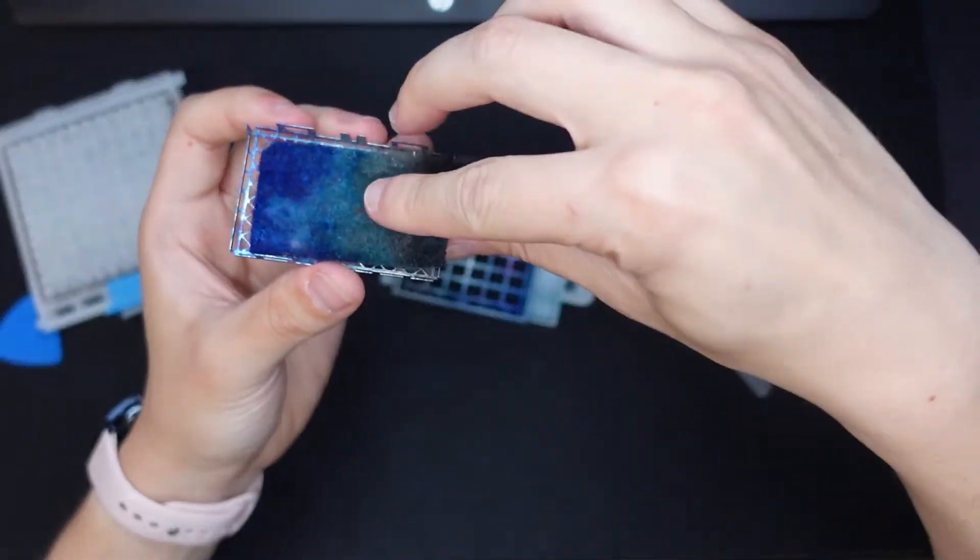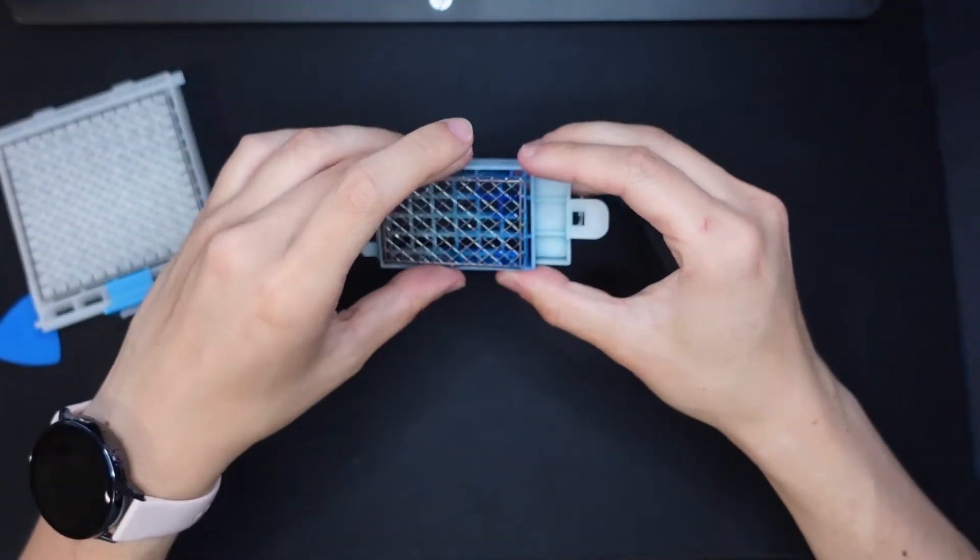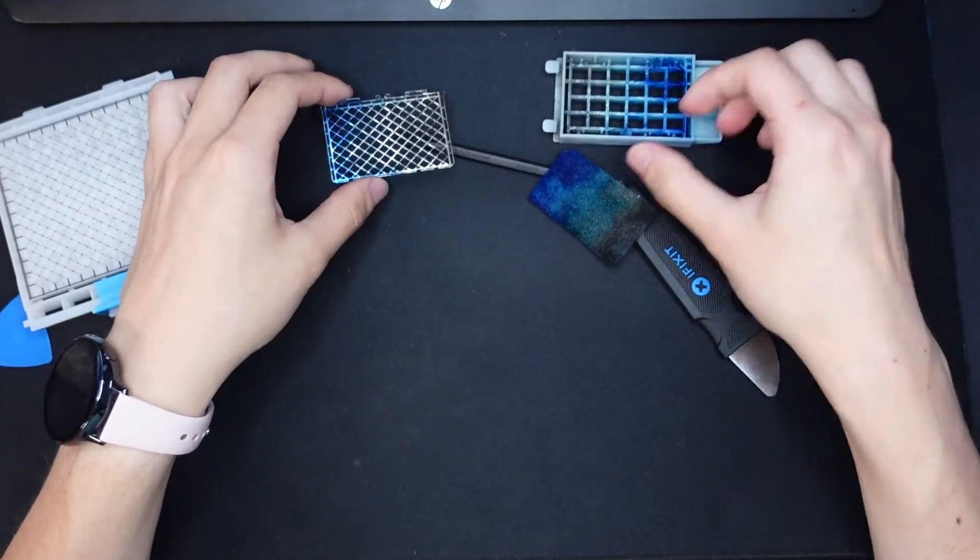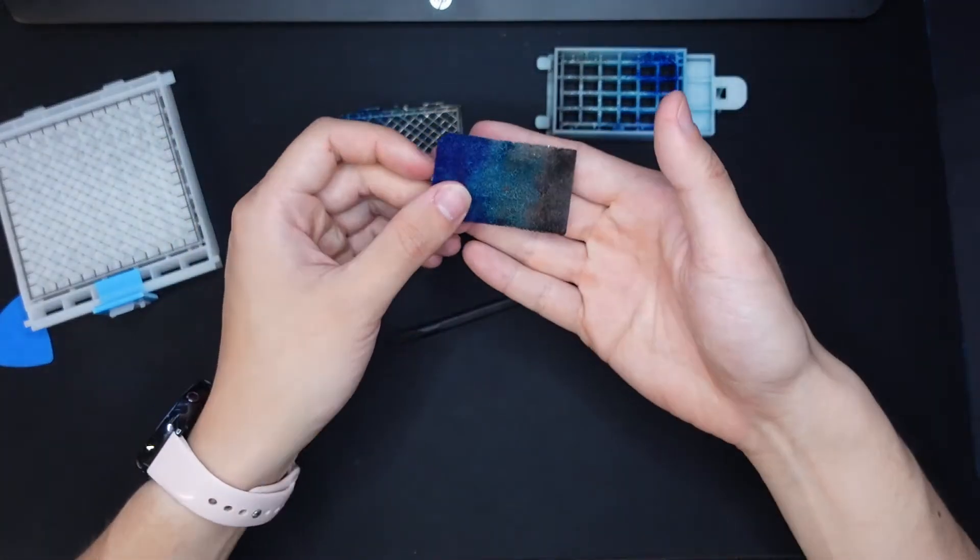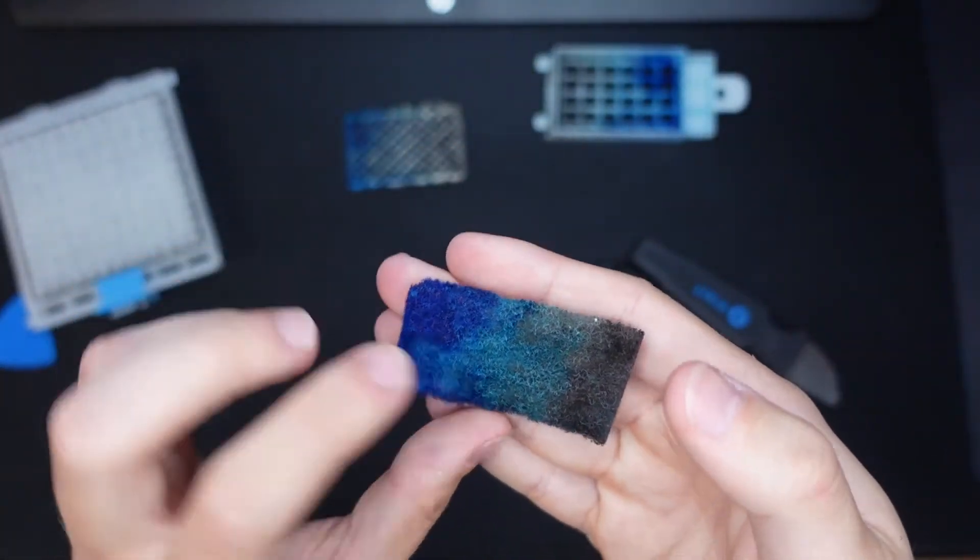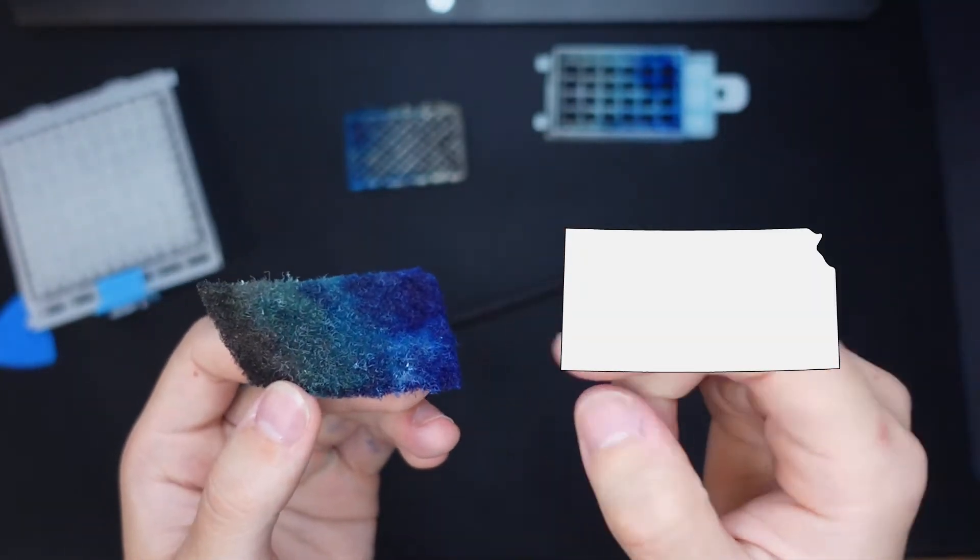And one thing I do want to note, it is directional. This does go in a certain direction because of these. It will only go in this way. So keep that in mind. Another thing is this is not a rectangle. This actually looks like the state of Kansas. It has a little cut out of the top here.